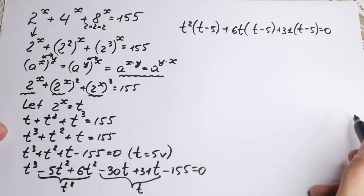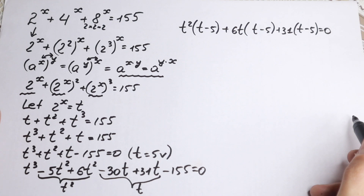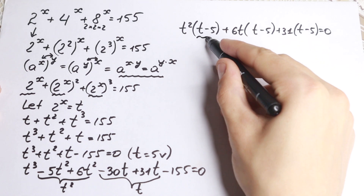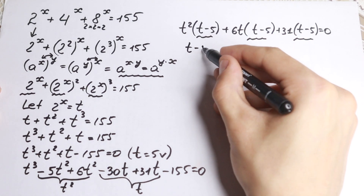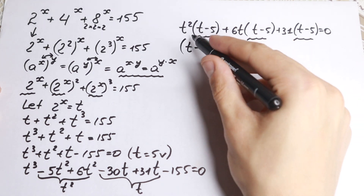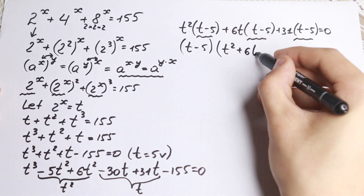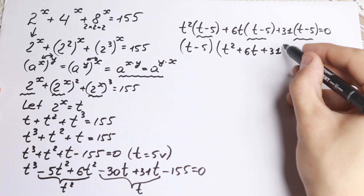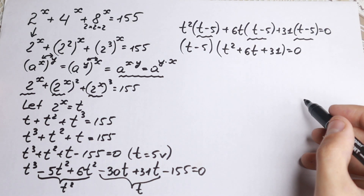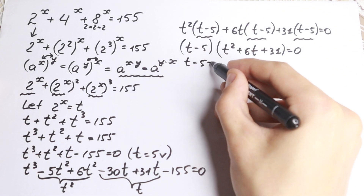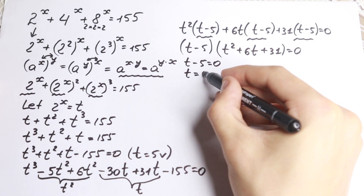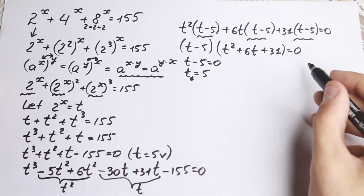You could also divide by (t minus 5) using polynomial division, but I like this grouping method. Factoring out (t minus 5) from all three groups gives us (t minus 5) times (t squared plus 6t plus 31) equals zero. Setting each factor to zero: from t minus 5 equals zero, we get t equals 5 as our first root.